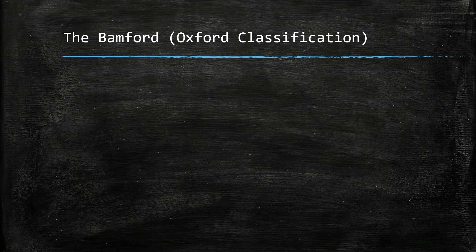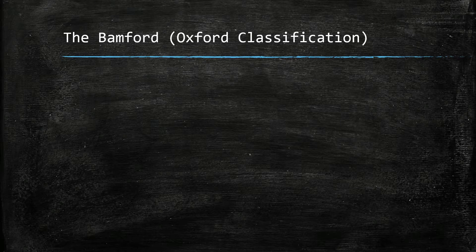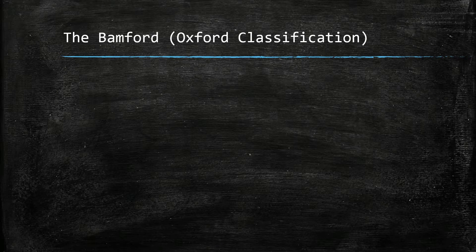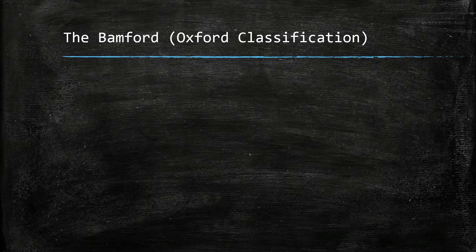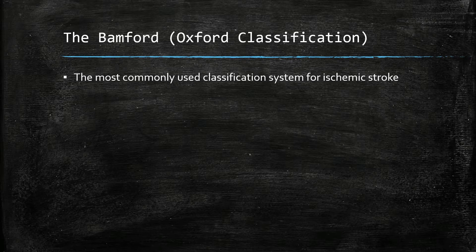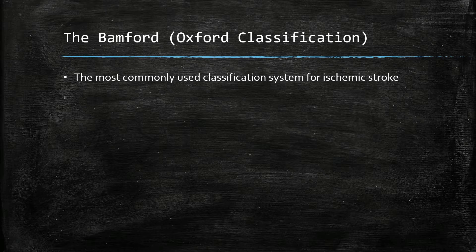The Bamford classification system, also known as the Oxford classification system, is the most commonly used classification system for ischemic stroke. It is a purely clinical score, not utilizing imaging. There are four categories.